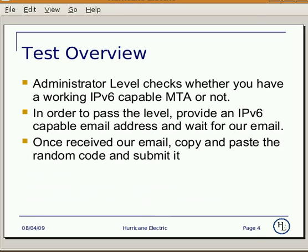Now, test overview. For this level, we check whether you have a working IPv6 capable MTA or not. In order to pass the level, you provide an IPv6 capable email address and wait for our email. Once you receive our email, copy and paste the random code and just submit it.